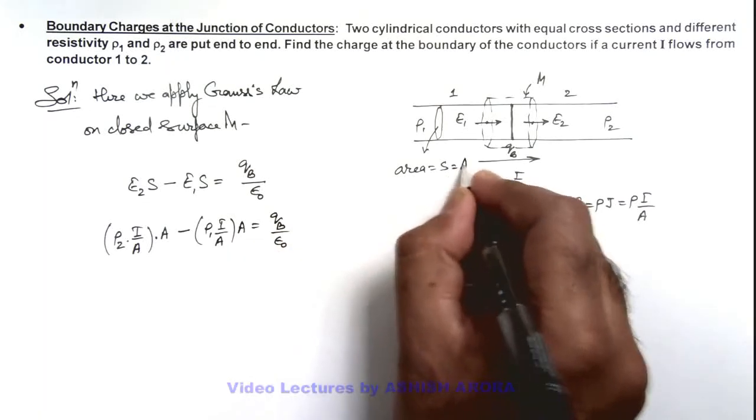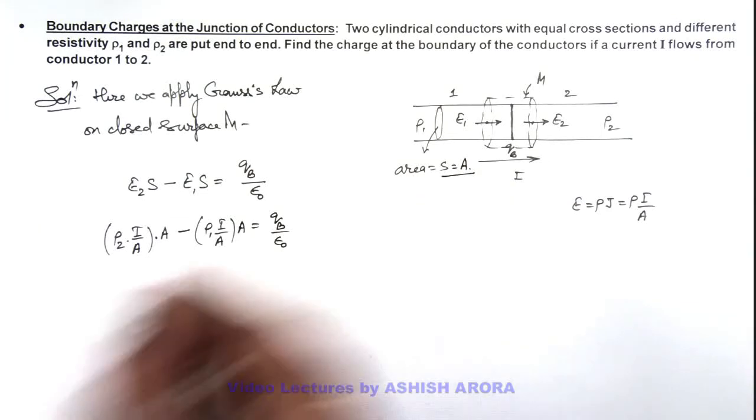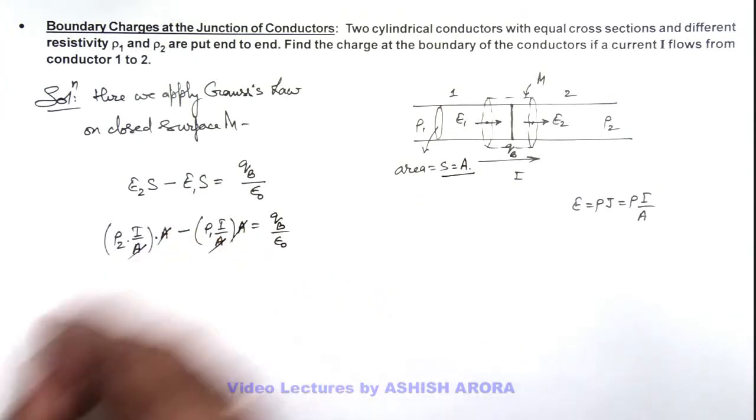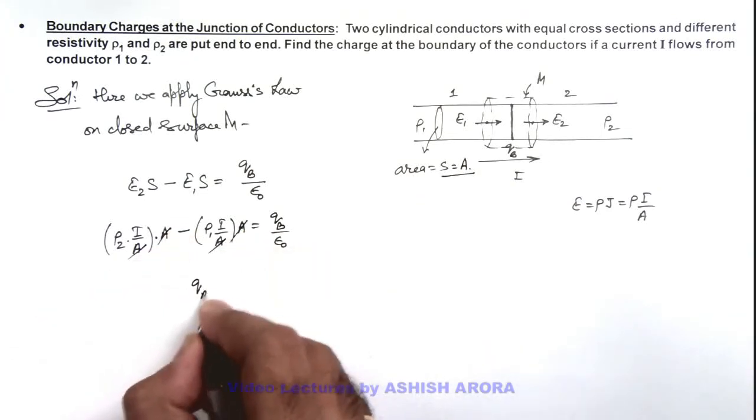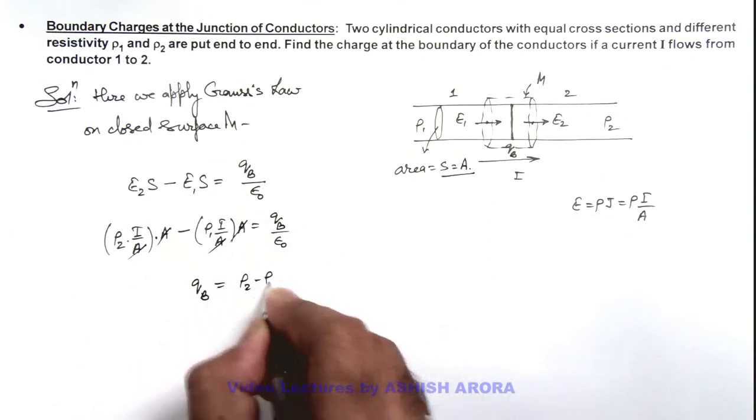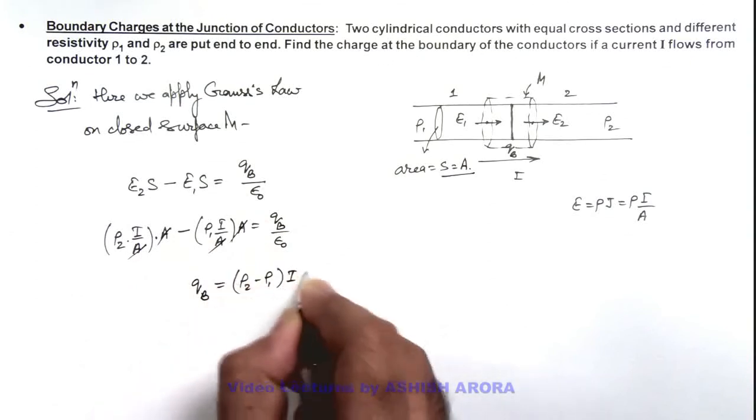Here this area I am taking as A only. So here this A gets cancelled out, and you can see the value of boundary charges we are getting: this is (ρ₂ − ρ₁) multiplied by i·ε₀.